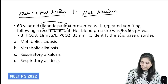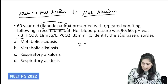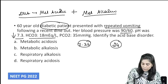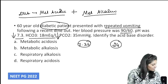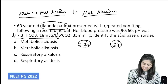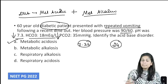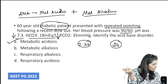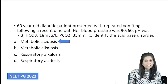Her blood pressure was 90/60, indicating a dehydration component. The pH was 7.3 — since 7.36 is the lower limit of normal, this represents acidosis. Bicarbonate is 18 mEq/L; normal bicarbonate is 21 to 27, so it is low. Based on the history it could be either A or B, but based on the values — low pH and low bicarbonate — this is metabolic acidosis. The person is suffering from diabetic ketoacidosis.